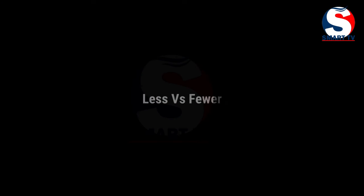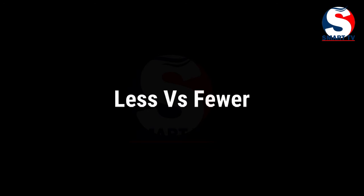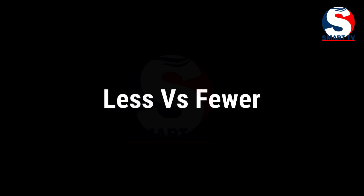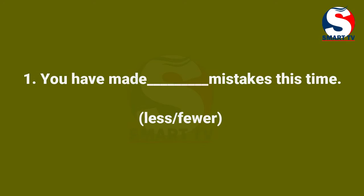Good morning, dear students. In your textbook you have some exercises — in this video we'll see that example. It is about 'less' and 'fewer': how these comparative adjectives are used in a sentence. You have made dash mistakes this time — in the bracket, two words have been given: 'less' and 'fewer'.